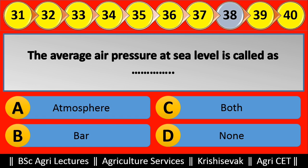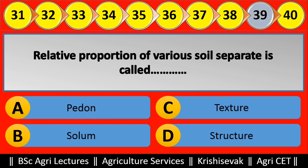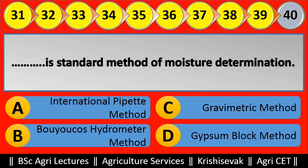Question 39: Relative proportion of various soil separates is called blank. Options are: (a) Pedon, (b) Solum, (c) Texture, (d) Structure. Right answer is Texture, option C.